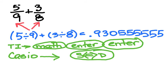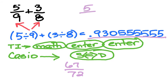So, you're wanting to turn this into a fraction. So, you're going to enter this and then you're going to come up with 67 over 72. So, one last time, 5/9 plus 3/8 equals 67/72.